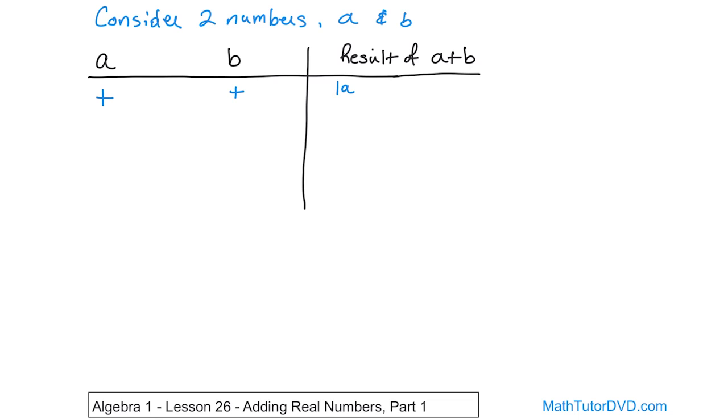What you do is basically add - I'm going to write it as absolute value of A, and you add to it the absolute value of B, which basically means, since they're both positive, you're just going to add A plus B.